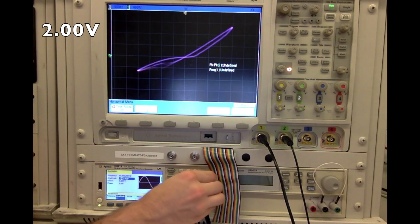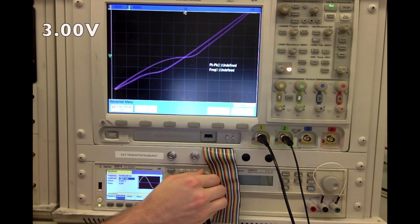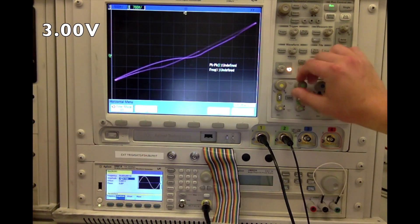That's 2 volts. Let's play around with it a little bit more. 2.6, 3 volts, and we have a hysteresis loop, as easy as that.